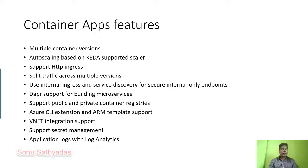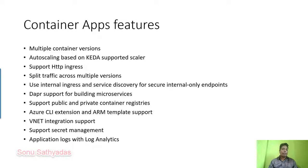You can split the traffic across multiple versions of your application. You can deploy multiple revisions and split your traffic — for example, 20% going to version 1.2 and 80% to version 2.0. You can also use internal ingress and service discovery for securing internal-only endpoints, making your application accessible only within a private network while providing service discovery.